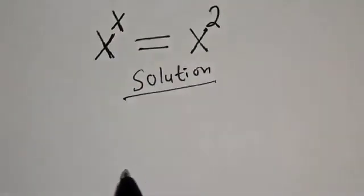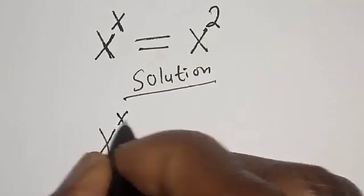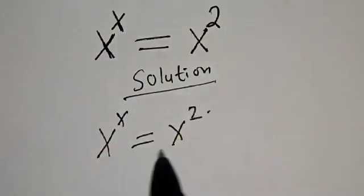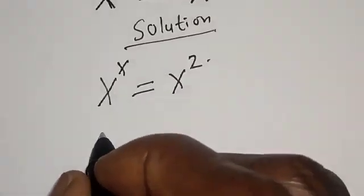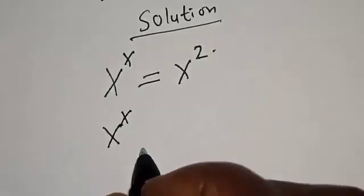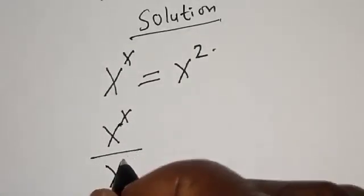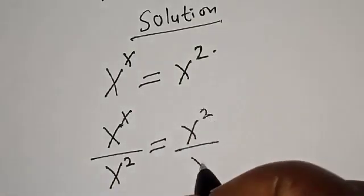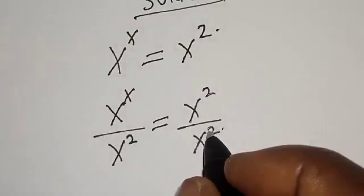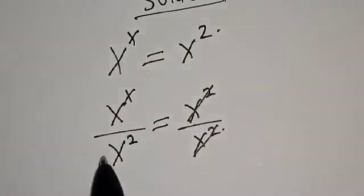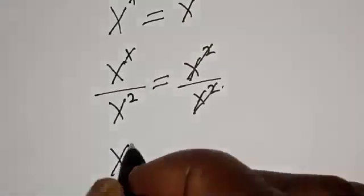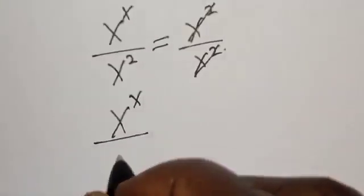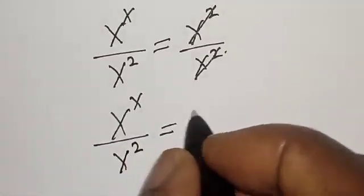We have the given equation: s raised to power s is equal to s squared. Now let's divide both sides by s squared. We have s raised to power s divided by s squared is equal to s squared divided by s squared. This one will cancel this, so the left hand side becomes s raised to power s divided by s squared, is equal to one.